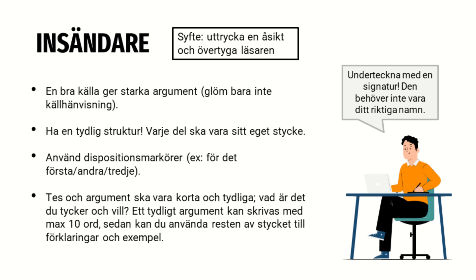För att vägleda läsaren kan du använda så kallade dispositionsmarkörer – alltså små flaggor eller vägskyltar för läsaren så de vet var de befinner sig i texten och vad du tycker är viktigt. Ett exempel är att markera sina argument med 'för det första', 'för det andra' och 'för det tredje'. Tesen och argumenten ska vara korta och tydliga. Ett tydligt argument kan skrivas med max 10 ord, och sedan har du ett helt stycke på dig att förklara med olika utvecklingar och exempel.